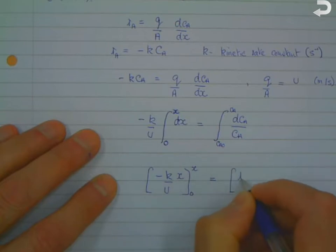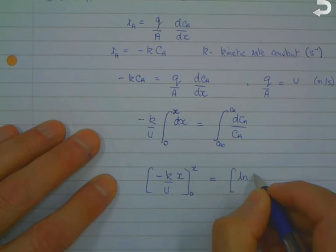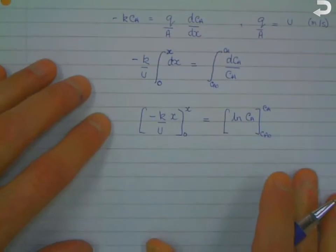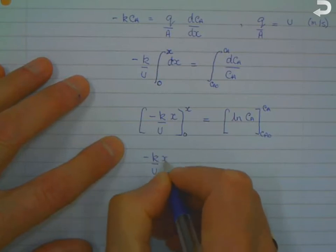So the integration, the integral of 1 over CA dCA is the log of CA, and again that's between limits of CA0 and CA.